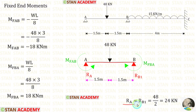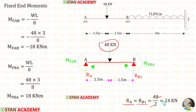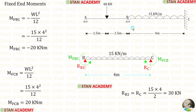Now let us find the vertical reactions RA and RB1 in span AB. We have symmetrical loading, so we divide the point load 48 by 2. We get RA and RB1 each equal to 24 kN.